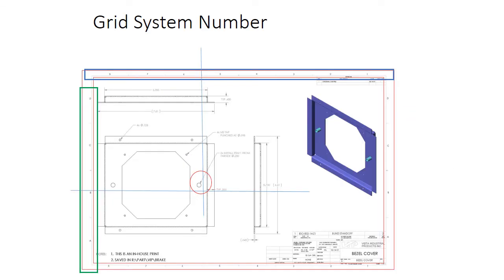Here's an example of a grid system. You can see at B, five and a half, you'd have this circle — this hole. If I needed to move that hole two inches up, I could communicate with the designer and say, look at this hole at B five and a half — can we move it up or make it larger? That's why we have grid systems and grid numbers, to help communicate with people.